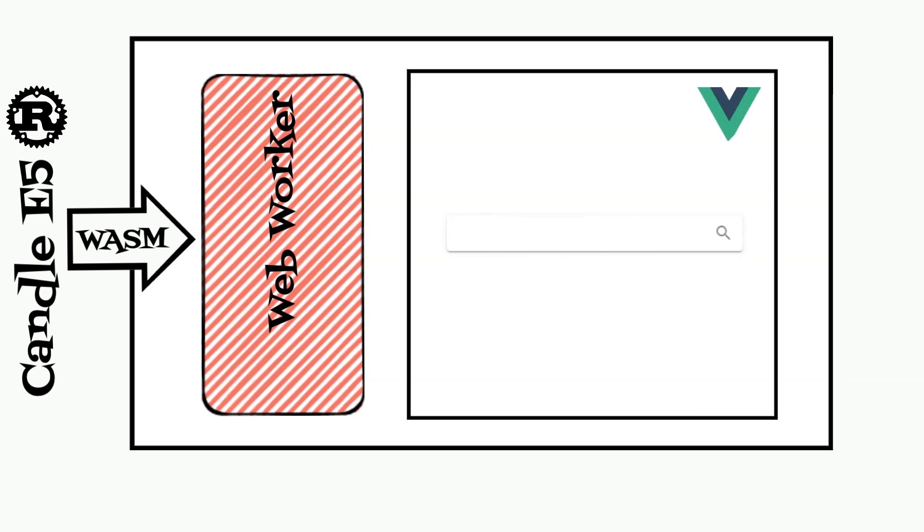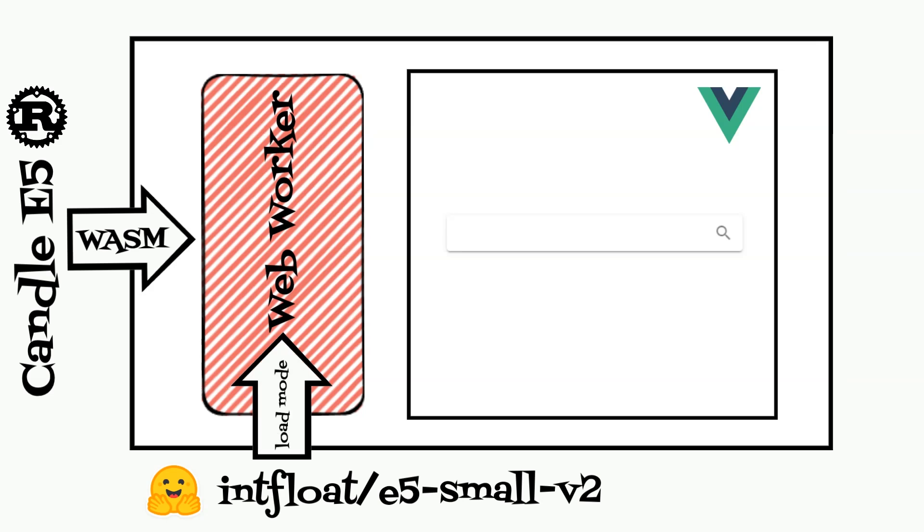The Rust code is based on the Candle WebAssembly example and exposes Model struct which loads the model and calculates embeddings. Compiled Rust struct is used in the Vue TypeScript WebWorker.